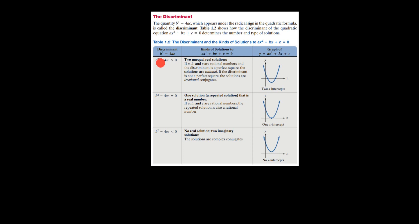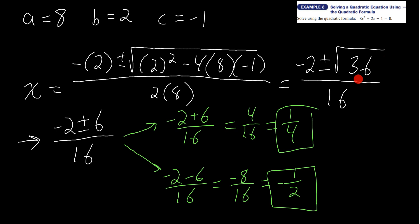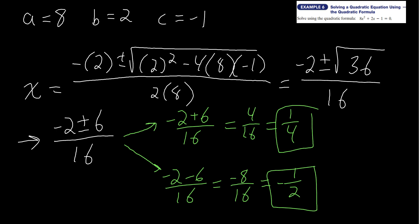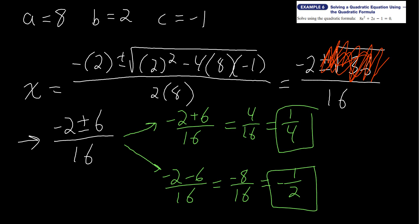If the discriminant is negative, we get two imaginary solutions — imagine if it were negative 36, we'd have i's in our solutions. If the discriminant is zero, we get exactly one real solution — because the square root of zero is zero, so the plus or minus term vanishes and we'd just have negative b over 2a as the single solution.